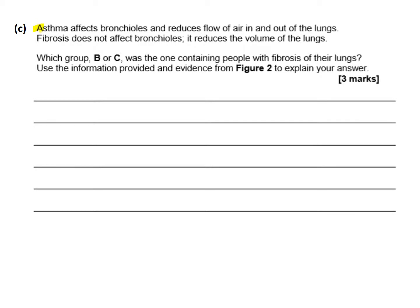The third question is about asthma and fibrosis. Asthma affects the bronchioles — breathing in pollen or other antigens can cause an autoimmune reaction, swelling of the bronchiole wall, and a reduced lumen size, making it hard to expire air. Fibrosis is different: it doesn't affect the bronchioles but reduces the overall volume of the lungs, so the volume of air being expired is much less.